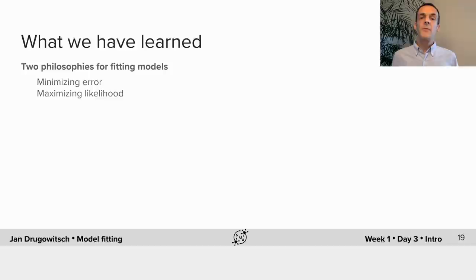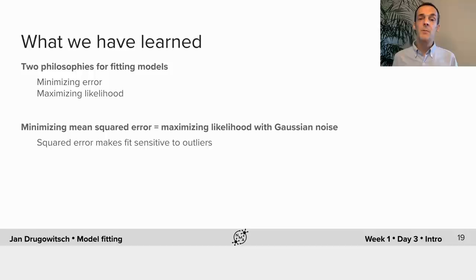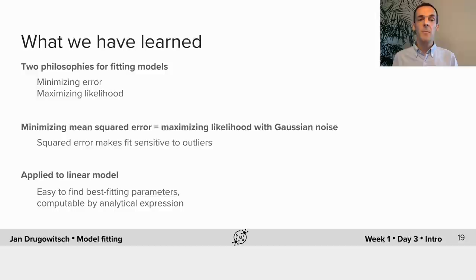So let's recap what we've learned in this part. First, there are two philosophies for fitting models: one is to minimize model error and the second is to maximize the likelihood. There is a duality between these two approaches: minimizing squared error turns out to be the same as maximizing the likelihood while assuming Gaussian noise. For this fairly standard assumption I also gave a word of caution, namely that it makes the model fit sensitive to outliers. Applying these approaches to linear models gives us favorable properties: the log likelihood is concave in the parameters, and we have an expression that allows us to compute the best fitting parameters directly from the data. This concludes the second part of my introduction.